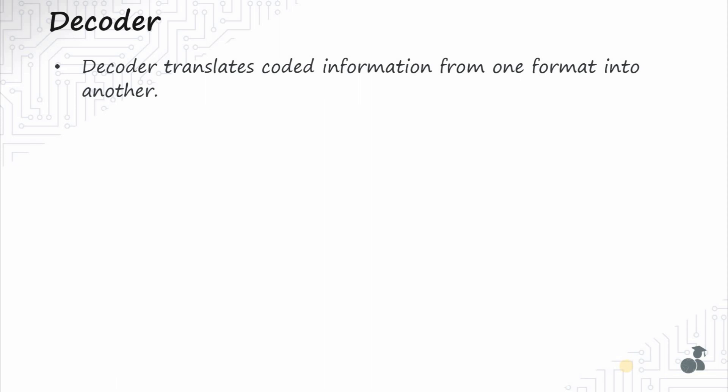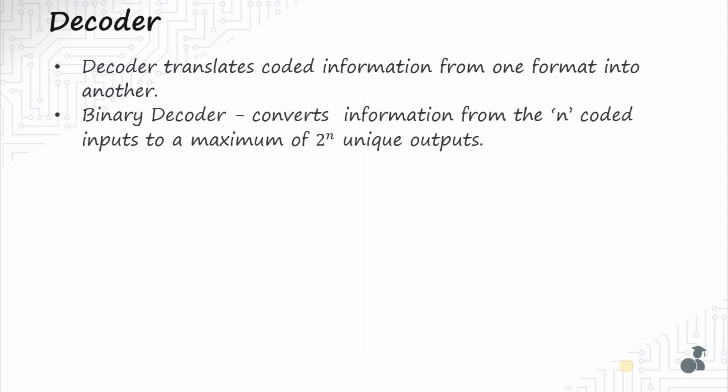A decoder can be any of the following types: BCD decoder, binary decoder, octal decoder, and so on. A binary decoder transforms an n-bit binary input signal to a maximum of 2N outputs. One of these outputs will be active high based on the combination of input present. Let's see an example of a 2x4 binary decoder.